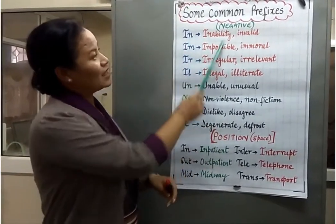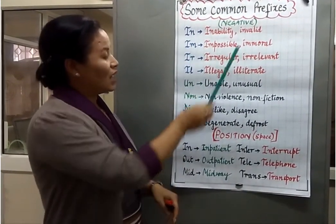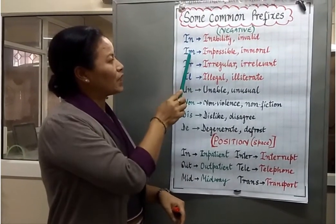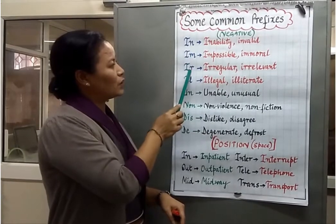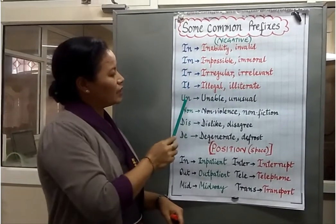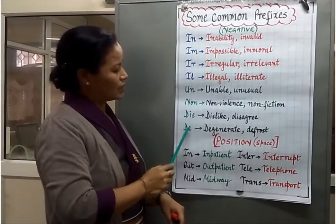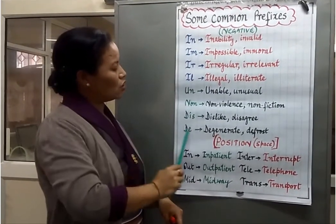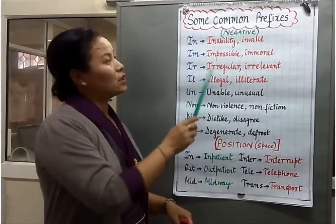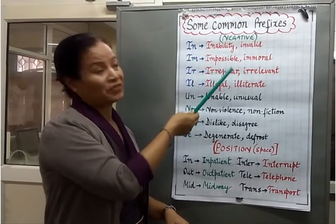Here you can see a list of prefixes. The prefixes I have written here are: in, im, ir, il, un, non, dis, and di. These are all prefixes that change the meaning of the word — we can say these are negative prefixes.